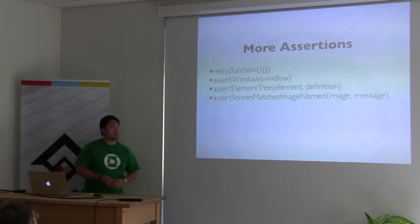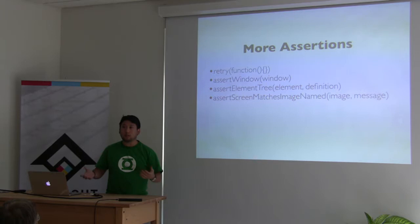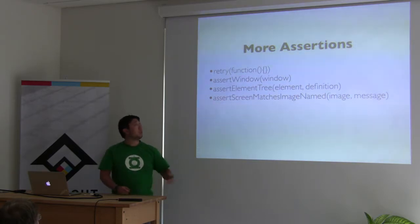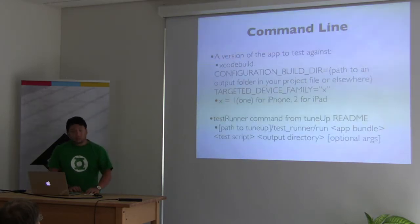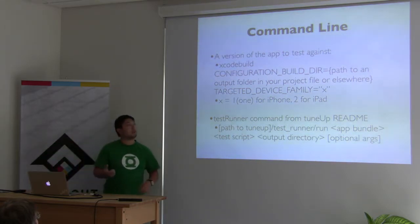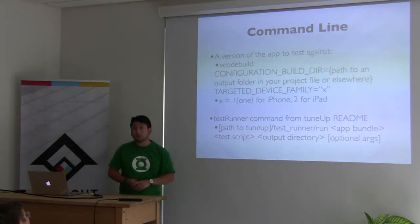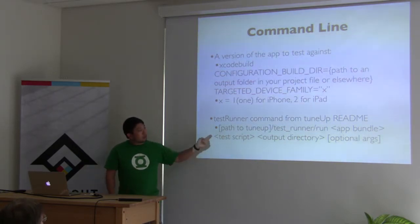There are some slightly more involved assertions, like retry, which takes a function that can contain multiple asserts and you can manipulate the retry count and delay times. Then there are more involved things like asserting specific windows, element arrays, and images. It normally takes your derived data as its reference for the app, so we normally just do an Xcode build and put it in an easy-to-find directory. And of course you specify your device families if you're doing a universal app.